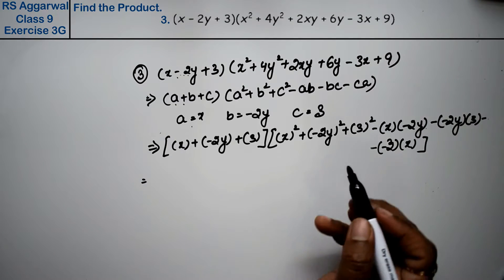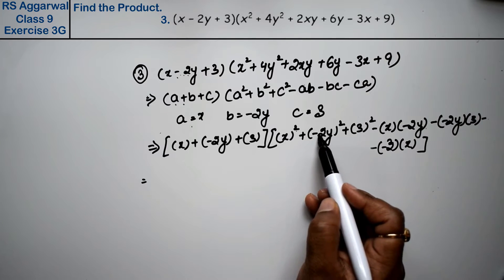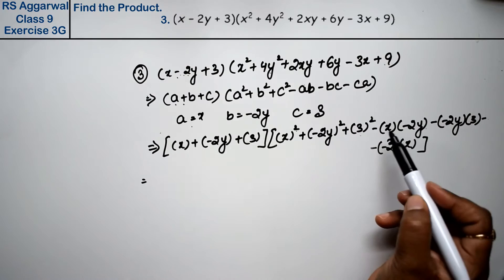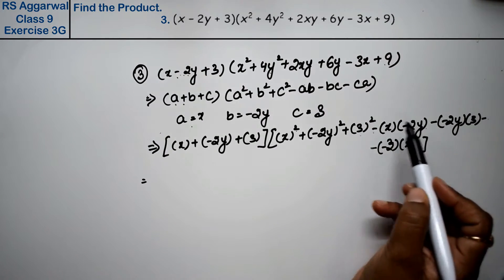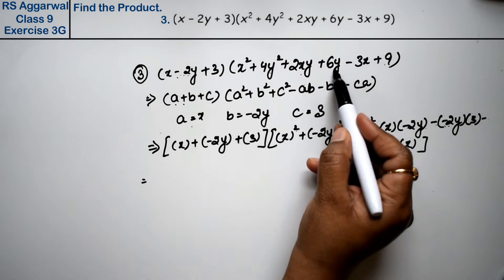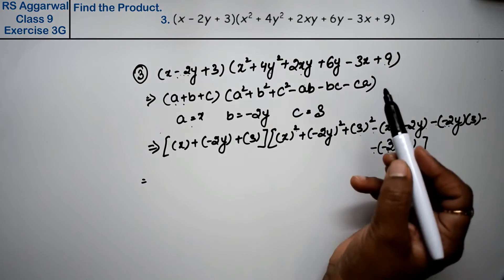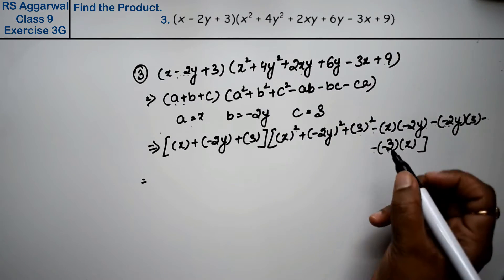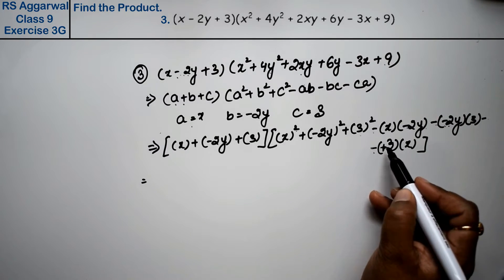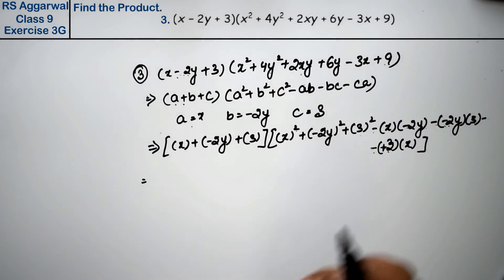So we see x² is, 4y² is, 9 is... and minus×minus is plus 6y, minus×minus is plus 3x. So which formula was this?